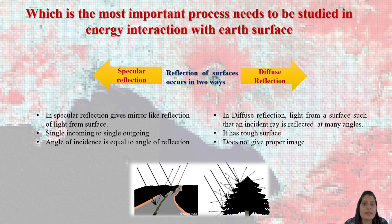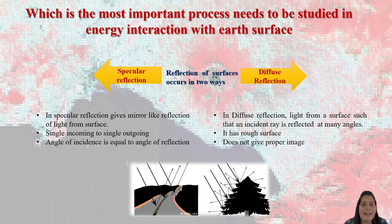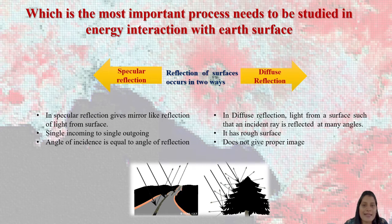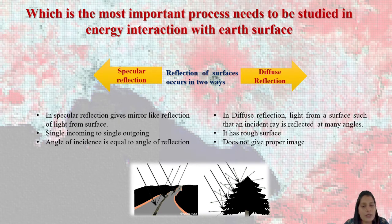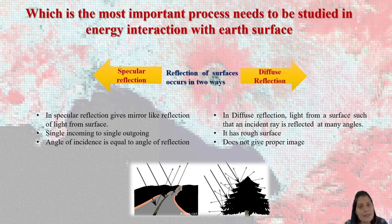There is a very important process to be studied in energy interaction with the earth's surface. The first is known as specular reflection and the second is known as diffuse reflection. You might have heard these names, but let's discuss them in detail. Specular reflection gives mirror-like reflection of light from the surface — single incoming to single outgoing.